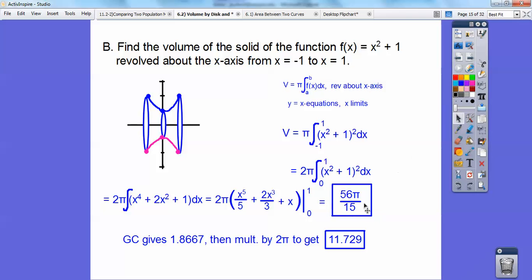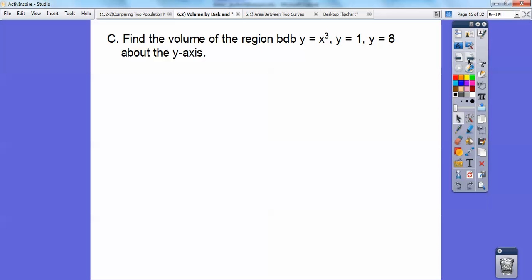All right, don't get so handy on your calculators. I mean, you know, try and remember how to do it by hand so you can do integration by parts if you have to. Find the volume of the region bounded by y equals x cubed, y equals 1, y equals 8, and this is about the y-axis. So if it's about the y-axis, I've got to convert this to x equals a y equation. So that's going to be x equals the cube root of y.